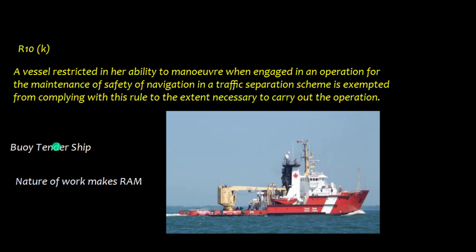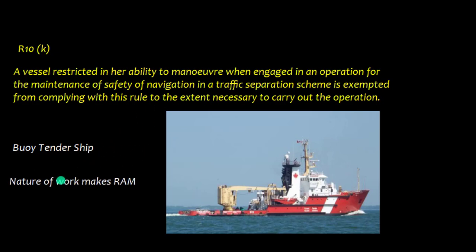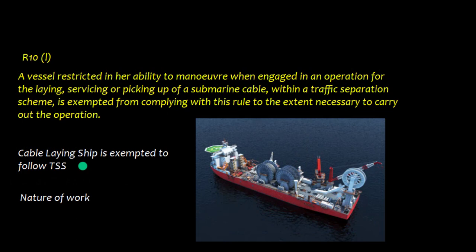Rule 10K provides an exemption for a vessel restricted in her ability to maneuver when engaged in the maintenance of the safety of navigation — such as a buoy tender. Because of the nature of the work, such a vessel is RAM and is exempted from complying with TSS rules. Similarly, a cable-laying ship is exempted from following a TSS because of the nature of its work.